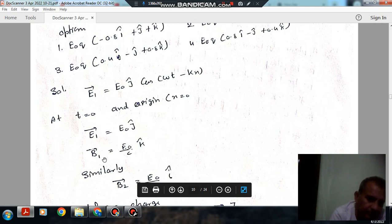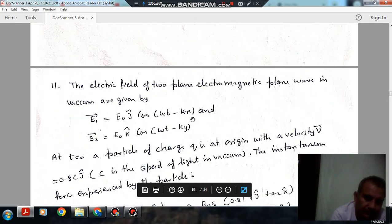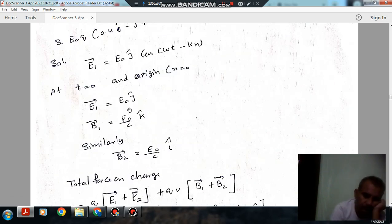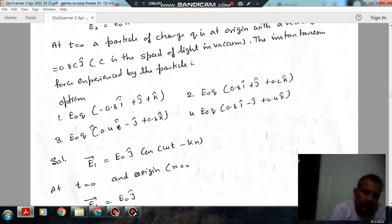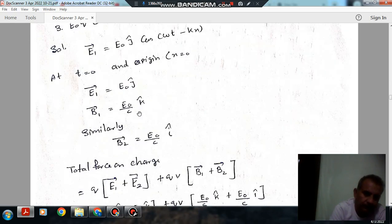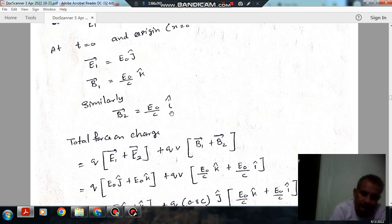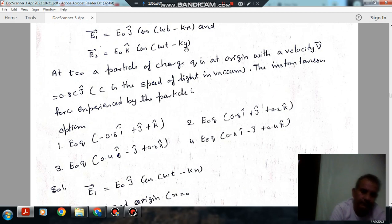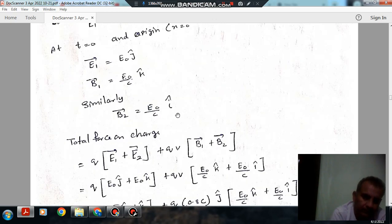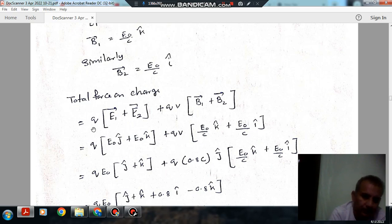So B1 vector is given as E0 by c. As it is in j direction and propagating in x, B1 will be in k direction. Similarly, as E2 is in k direction and propagating in y direction, so B2 will be in i direction. The total force is electric force plus magnetic force.